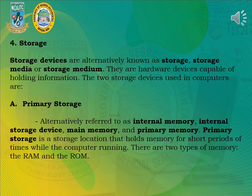Storage devices, alternatively known as storage media or storage medium, are hardware devices capable of holding information. The two storage types used in computers are primary storage — alternatively referred to as internal memory, internal storage device, main memory, and primary memory — and secondary storage. Primary storage is a storage location that holds memory for short periods of time while the computer is running. There are two types of memory: RAM and ROM.